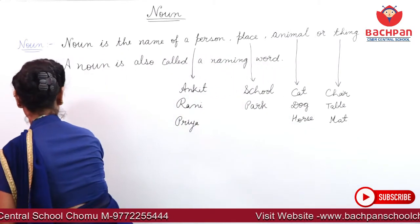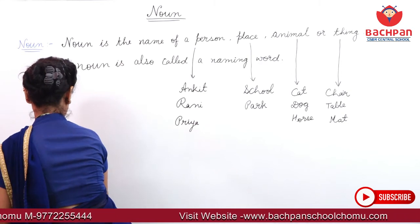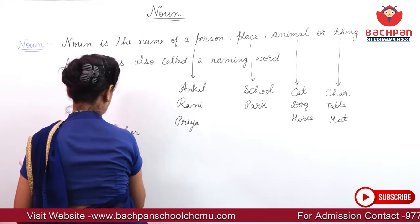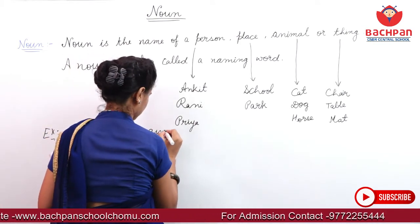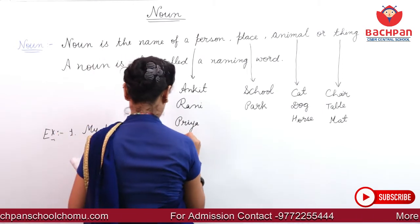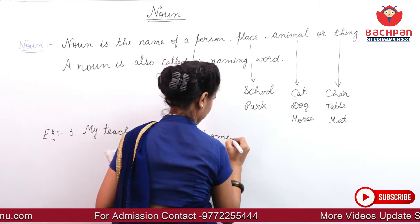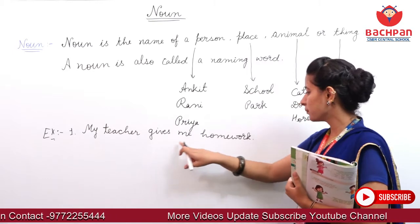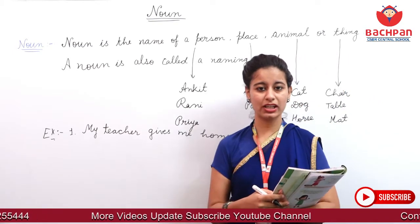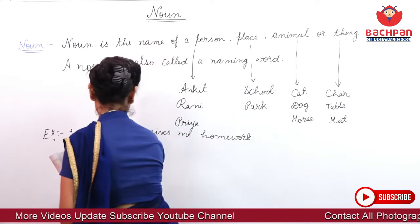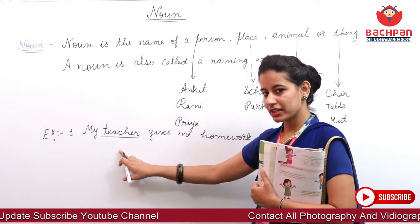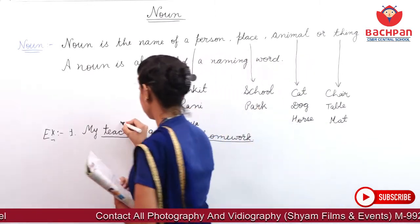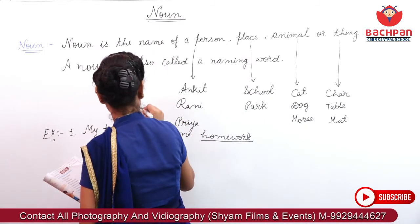Now, some example. My teacher gives me homework. Toh apan ni kya sentence hai? My teacher gives me homework. Toh aap ki teacher ne aapko homework diya. Toh ismein noun kya hua? Ismein noun teacher — particular person aa raha hai. Toh teacher, aur aapko kya diya? Homework. Toh ismein noun hua teacher.